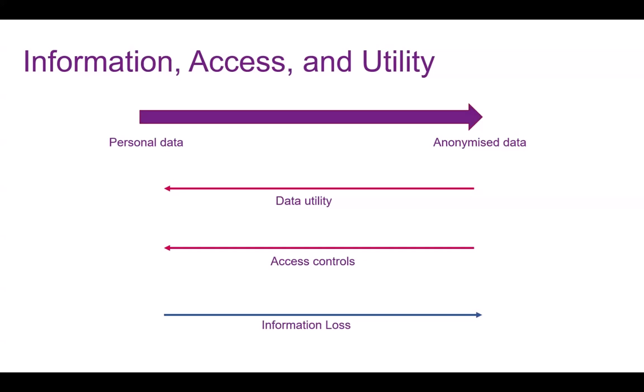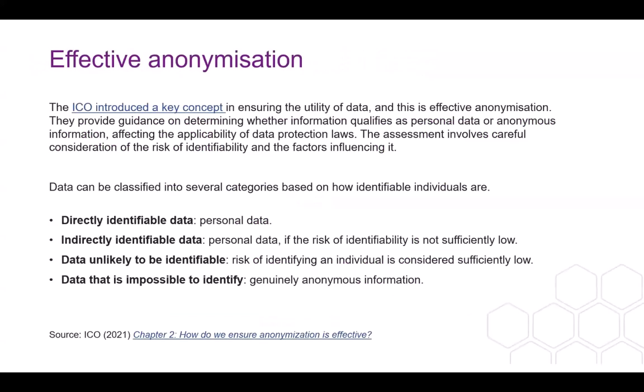The original personal data would have the greatest usage and the most information, but fewer people would normally be allowed to access it. So how do we balance all these different aspects? How can we hopefully maintain at least a lot of data utility while also anonymizing the data? The ICO has introduced the concept of effective anonymization, providing guidance on determining whether information qualifies as personal data or anonymous information and the careful consideration of the risk of identifiability.